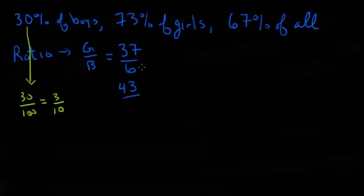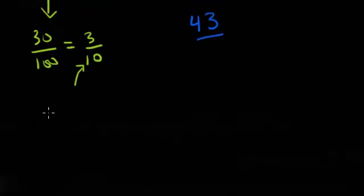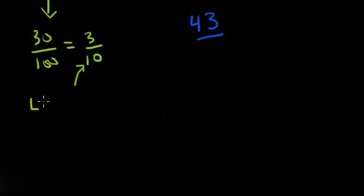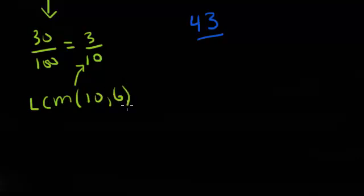So the number of boys, which we already knew had to be a multiple of 6, must also be a multiple of 10. Well, if they need to be a multiple of 6 and simultaneously a multiple of 10, we need to find the least common multiple of 10 and 6. And in order to do that, we use the techniques from our previous course and find the least common multiple to be 30.